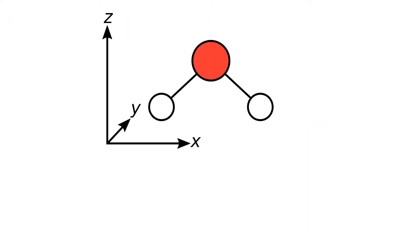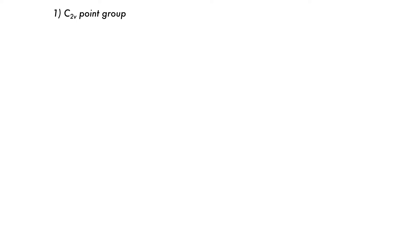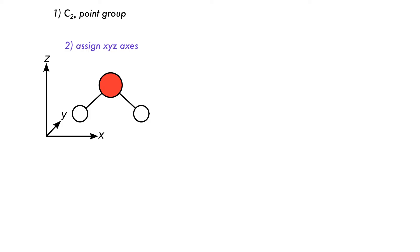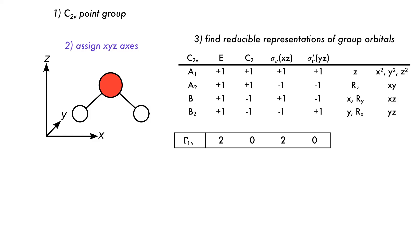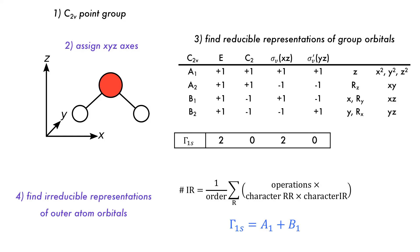Now we consider our first non-linear molecule. Water has a bent geometry with the C2v point group. First, the point group is assigned: water belongs to C2v. Next, the axes need to be assigned: the principal axis of rotation is the z-axis, the xz plane is the molecular plane, and the y-axis is perpendicular to the molecular plane. Using the C2v character table, the reducible representation for the outer group orbitals can be determined. Under E there is no change; for C2 both atoms move giving 0; for reflection in the xz mirror plane there is no change giving 2; but in the yz plane they do change giving 0. This can then be reduced to give the symmetries of the group orbitals as A1 and B1.